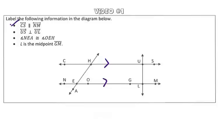The next part asks us to show that line US is perpendicular to line UL. So this symbol right here, this upside down T, means perpendicular to.